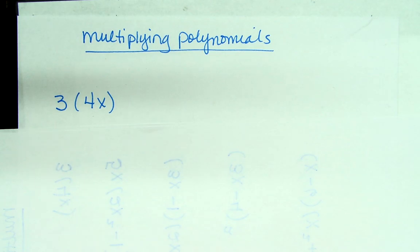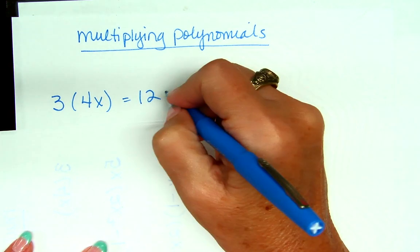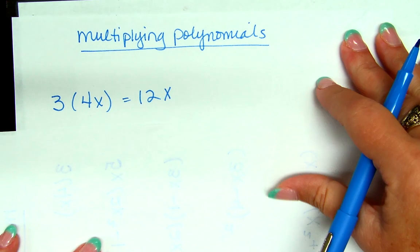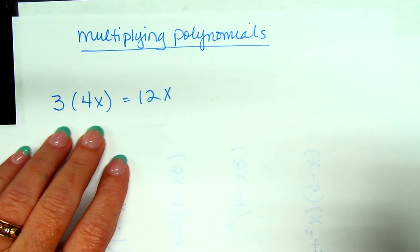Okay, so we just say 3 times 4x, and what do we get? 12x. 12x. Y'all are welcome, by the way. Okay?